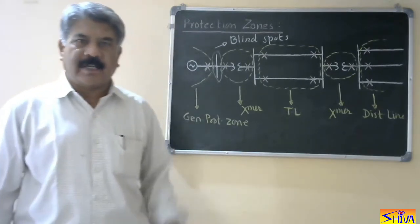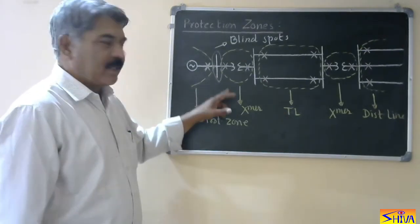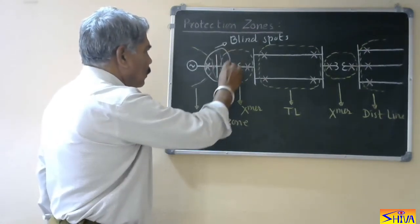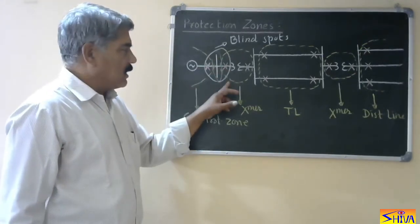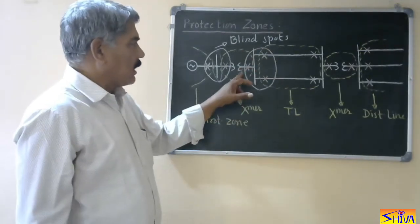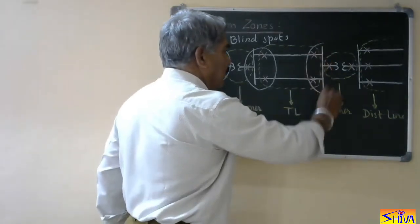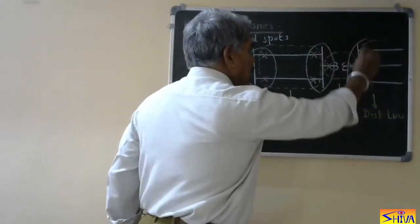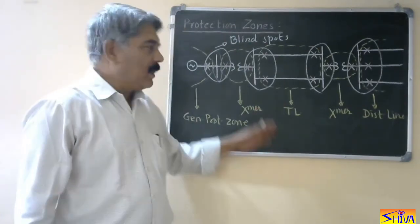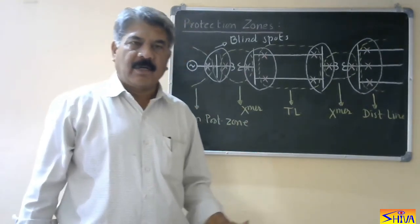Now how to avoid the blind spot? Faults can occur in the blind spots too, so we have to take care of them. To avoid this, we provide overlapping of protection zones. This area will then be covered by both the generator and transformer protection zones. Similarly, this area is covered by both the transformer and transmission line protection zones. So there is no blind spot. Normally, protection zones overlap in order to avoid blind spots.